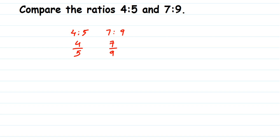In the easy way, you cross multiply: 9 gets multiplied with 4, and 5 gets multiplied with 7. So 9 × 4 = 36 and 5 × 7 = 35. Now, 36 is greater than 35, which means 4 by 5 is greater than 7 by 9. Just cross multiply, compare the products, and the corresponding fraction or ratio is greater.